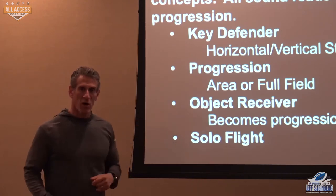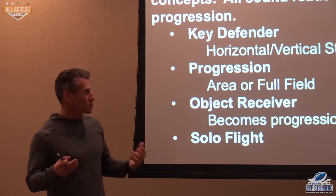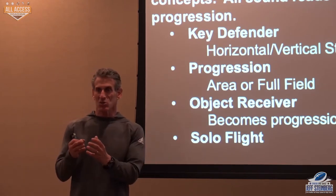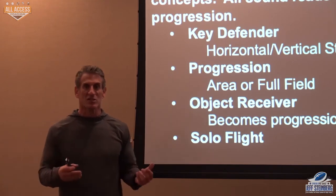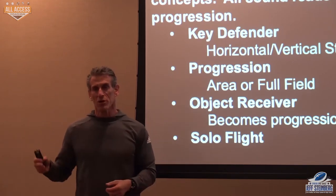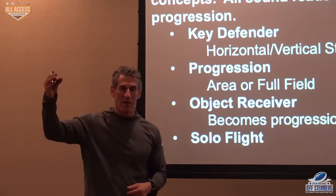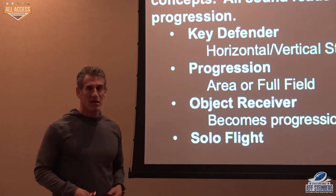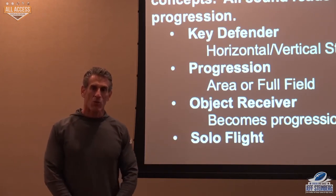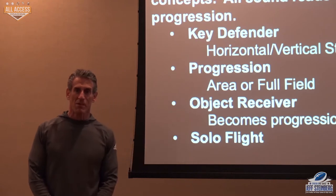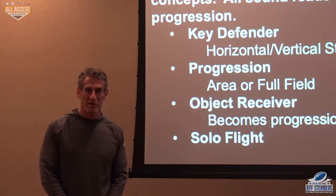The third one is what we call an object receiver read — it's a triangle read, telling us where we'd like to start the read. Then based on how the defense is playing that receiver, we're either going to throw outside of him, inside of him, in front of him, or behind him. And then lastly, just like probably everybody does, we have a matchup route read where we're taking a player and matching them up versus a defender. That's what we would call a solo flight read.